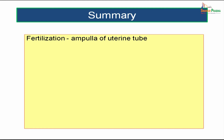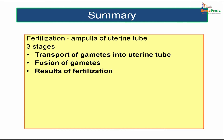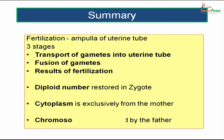Fertilization is actually happening at the ampulla of the uterine tube and it occurs in three stages: transport of gametes into the uterine tube, followed by fusion of gametes — the spermatozoa from the father and the oocyte from the mother — resulting in fertilization. The main aim of fertilization is to restore the diploid number in the zygote, made possible by the haploid contribution from both father and mother. The cytoplasm is exclusively from the mother.